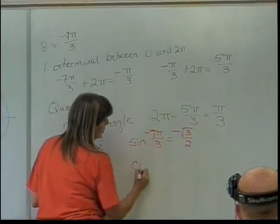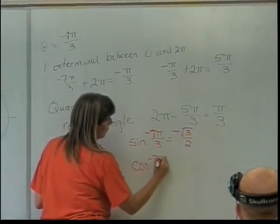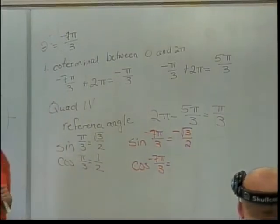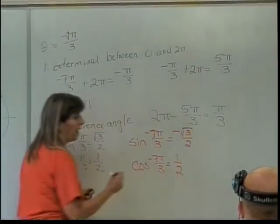What about my cosine of negative 7 pi over 3? It's going to be positive. Yeah. Okay, so it's just going to be positive 1 half.